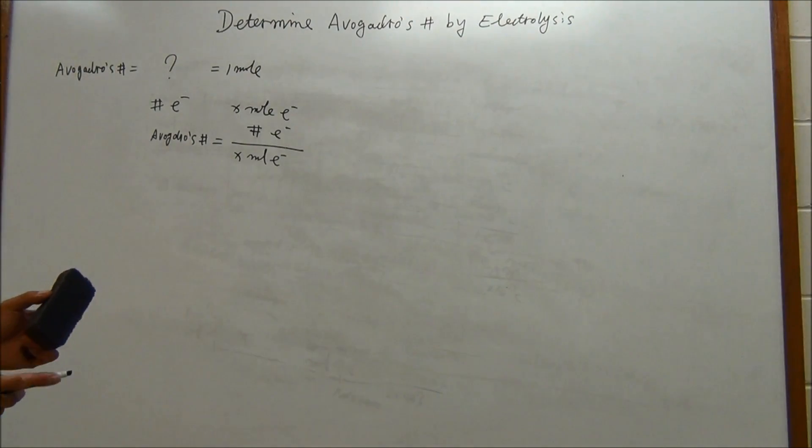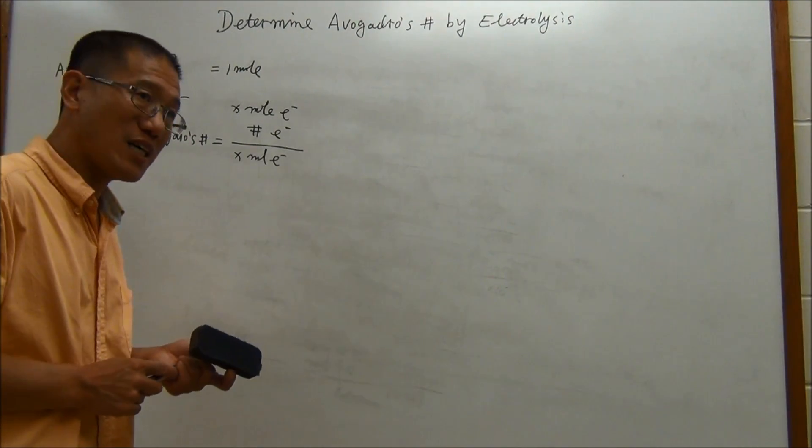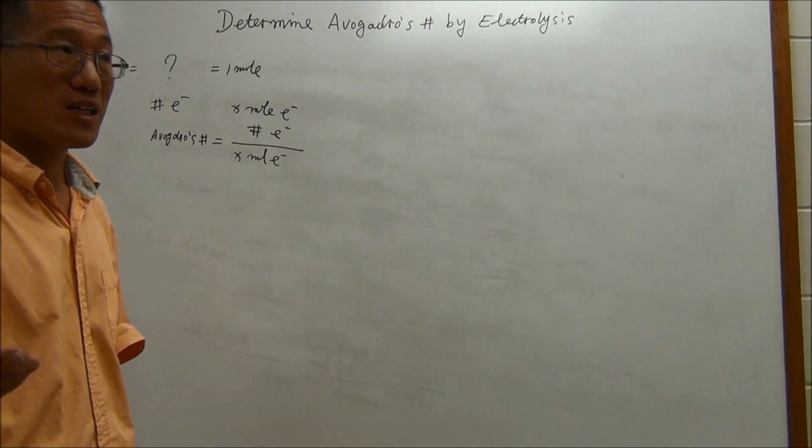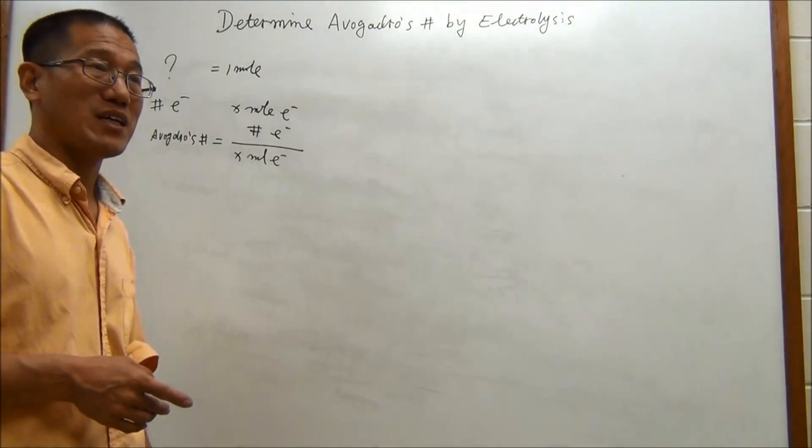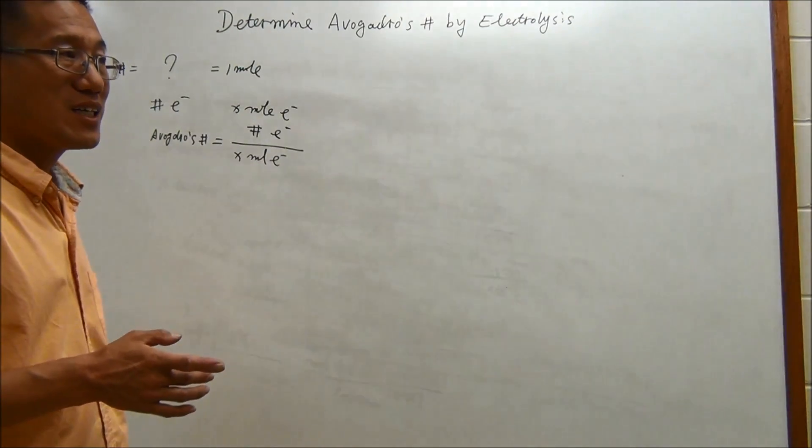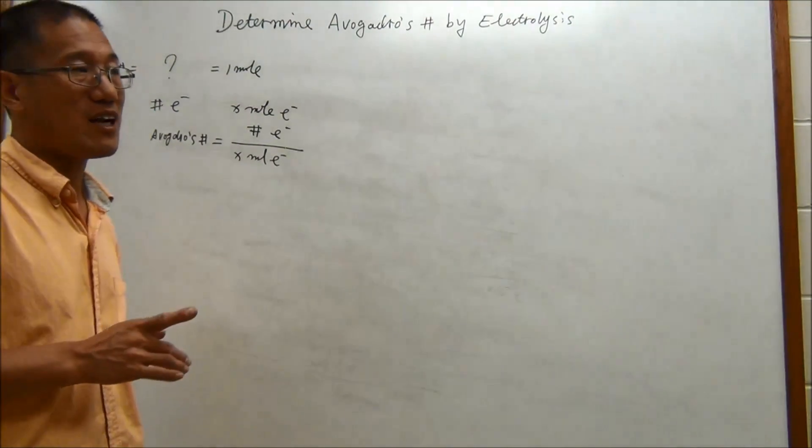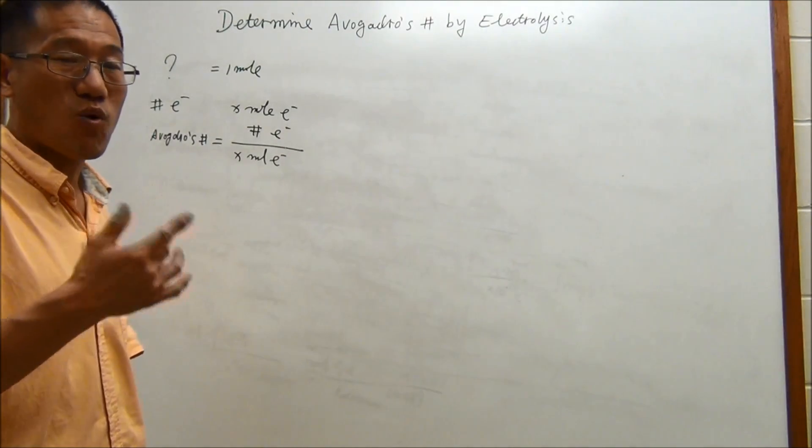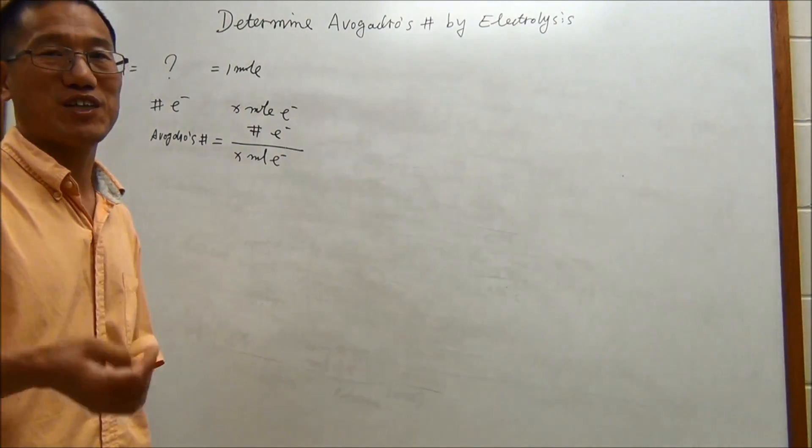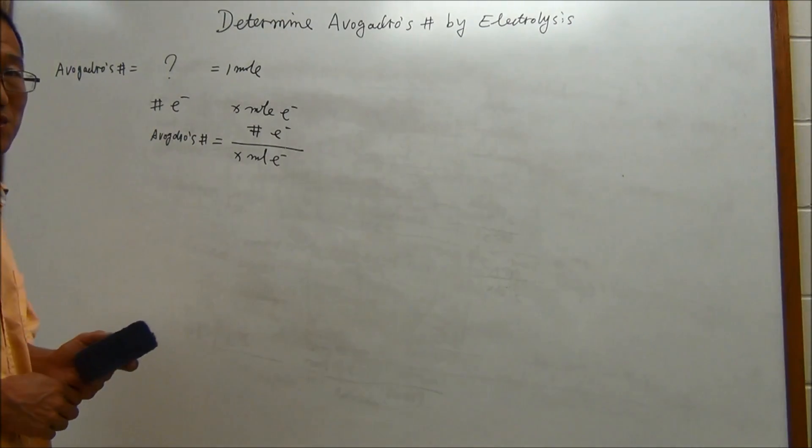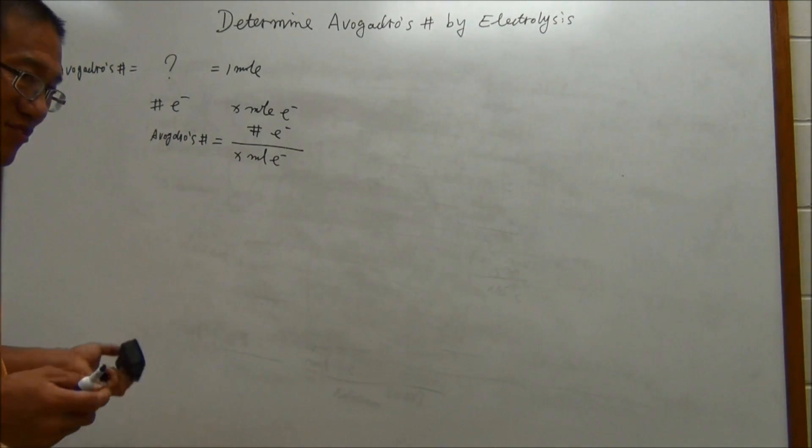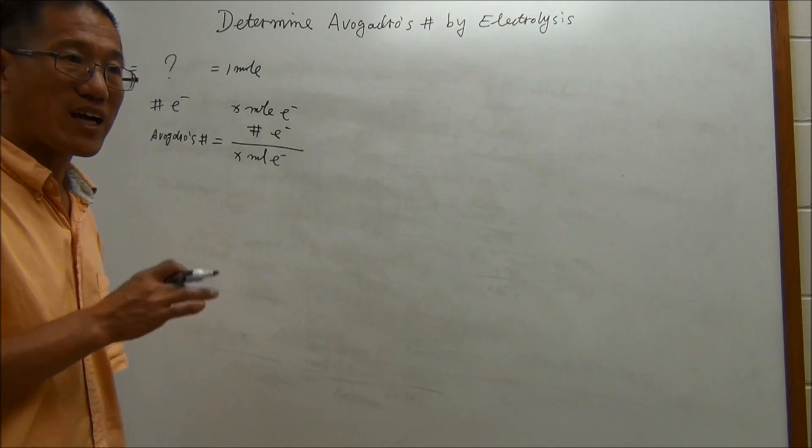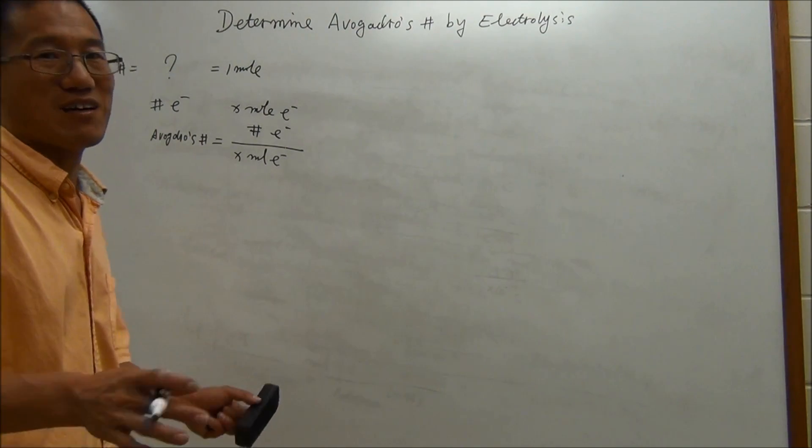But then you may wonder, how do we count how many electrons? Yes, this is very challenging. If you count from 1, 2, 3, I'm pretty sure, even if you can count 10 numbers per second, you cannot finish one mole before you die. This is a huge number. We cannot do it that way. So if there are any other methods, we can count them without spending our whole life to do that.